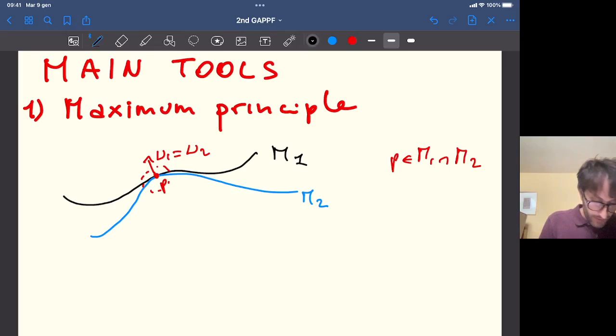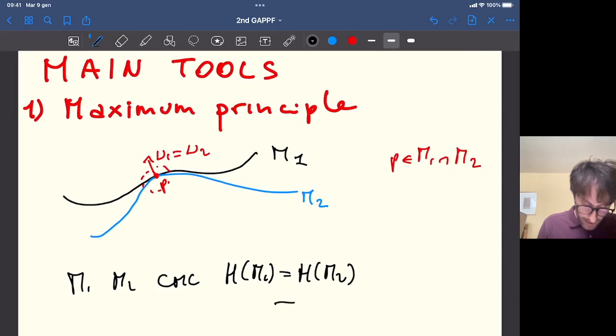If M1 and M2 are CMC, and the mean curvature of the first one equals the mean curvature of the second one, then the maximum principle says that the picture is wrong because M1 equals M2.